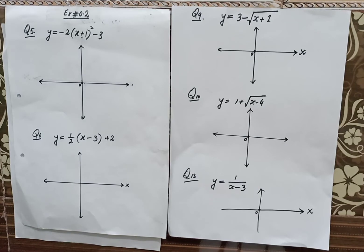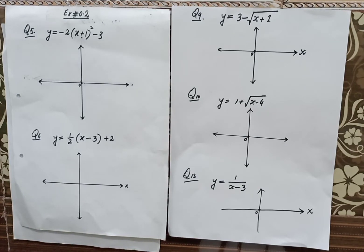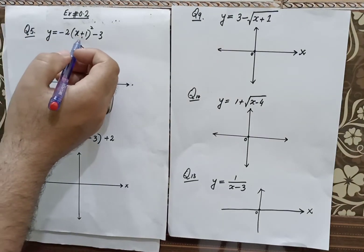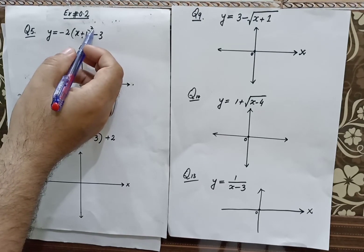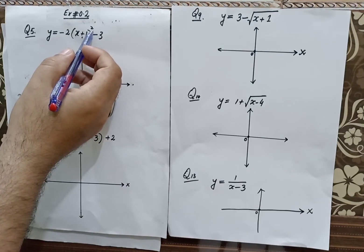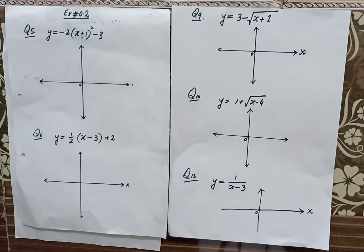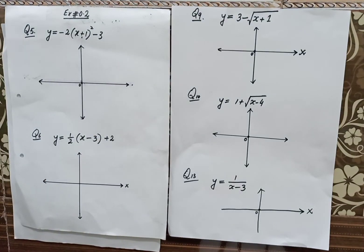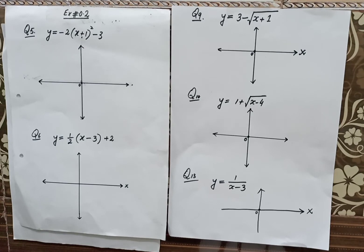To develop the graphical form of this function, dear students, first we have to understand the nature of this function. As we can see, the independent variable has the power 2, meaning it has a quadratic form. So we know the graphical form of any quadratic function is simply a parabolic shape.